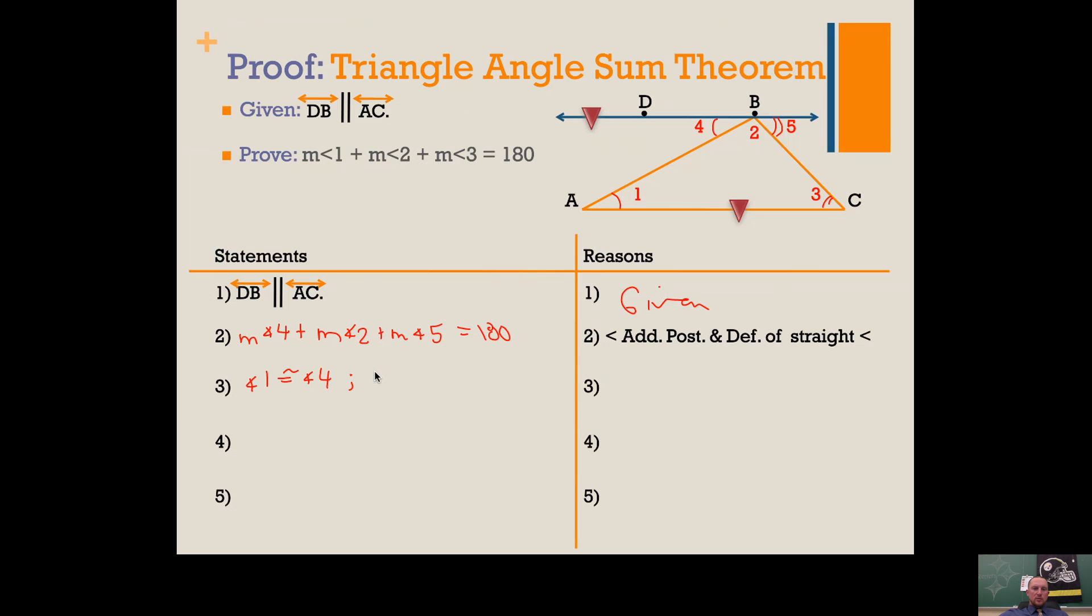So we know those angles are congruent. Now if you have congruent angles, that means their measures are equal. So the measure of angle 1 equals the measure of angle 4, and the measure of angle 3 equals the measure of angle 5. That's the definition of congruent.